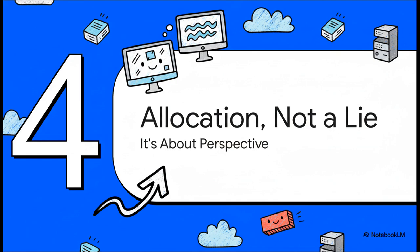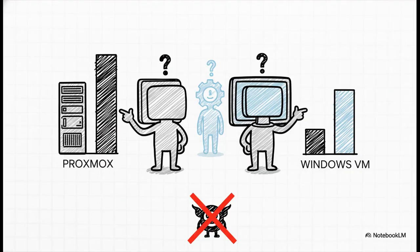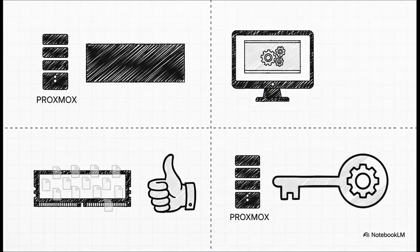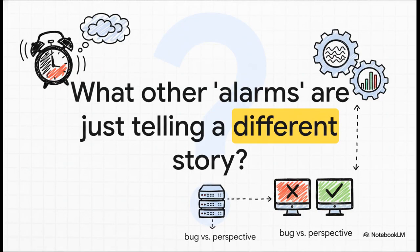As we wrap up, it's really important to reframe the whole situation. Proxmox isn't lying to you. Windows isn't lying to you either. That terrifying red bar on your dashboard isn't actually a sign that everything's about to explode. This whole thing is not a bug — it's not a flaw in the software. It's just what happens when two different systems are talking about two different things without a translator in the middle. Proxmox reports the total memory it has loaned out. Windows reports only the memory it's actively using right now. That huge gap? That's mostly Windows being smart and using cache. And the magic key — the secret decoder ring that lets them talk to each other — is the QEMU guest agent and that balloon driver. It's the translator that was missing all along.